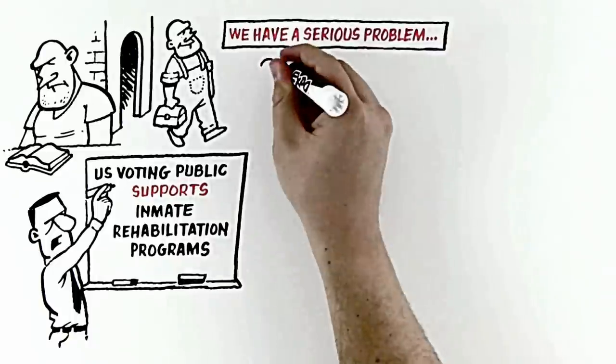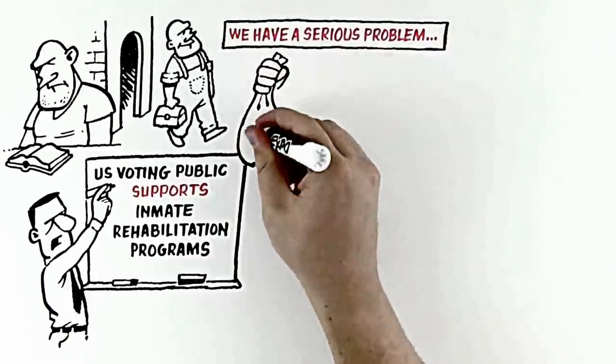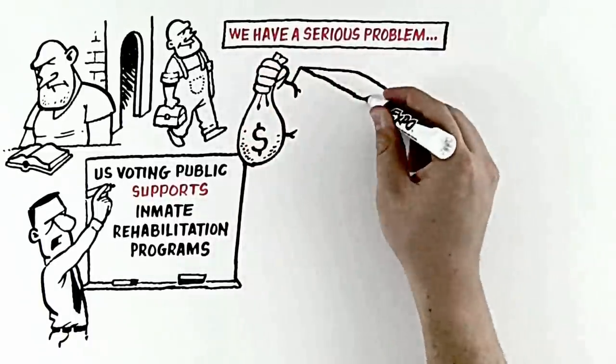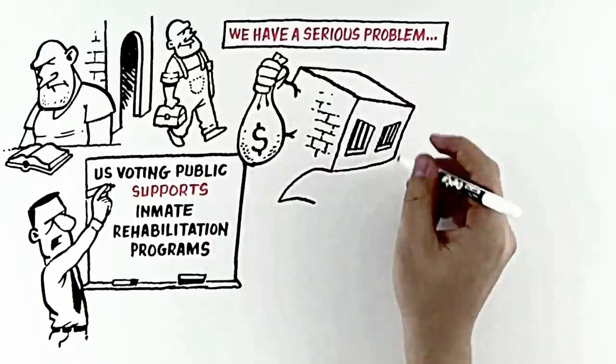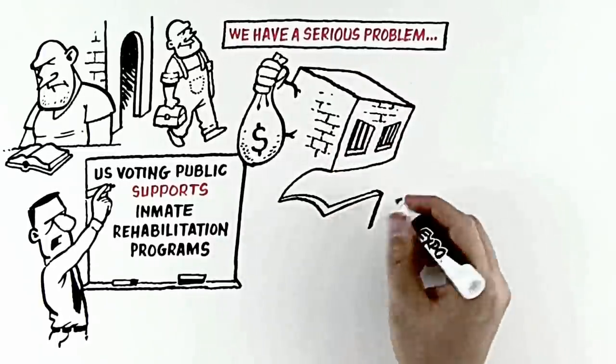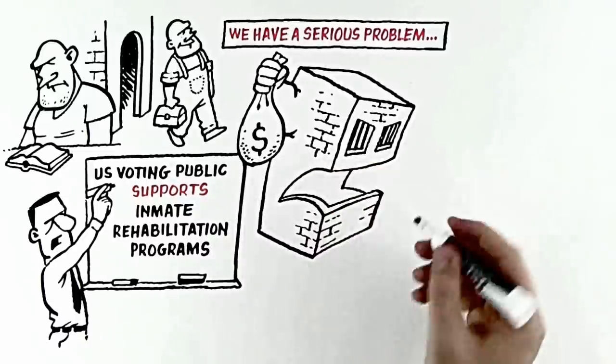But U.S. rates of recidivism remain among the worst in the world. For instance, of the more than 700,000 inmates who will be released from U.S. prisons this year, more than 40% will reoffend and be back in prison within just three years.